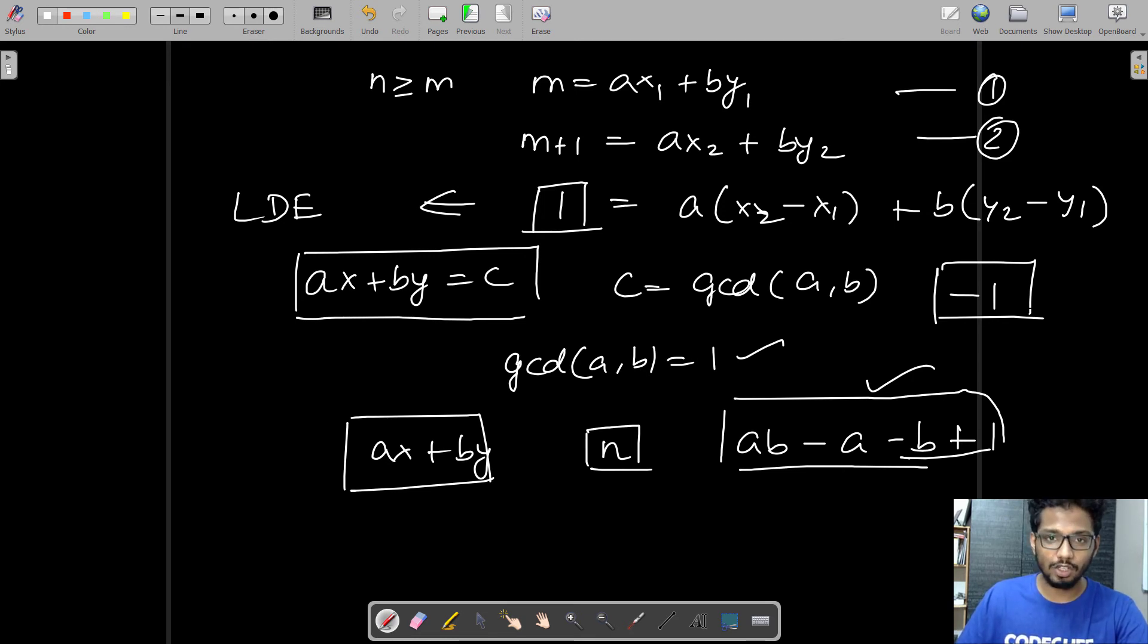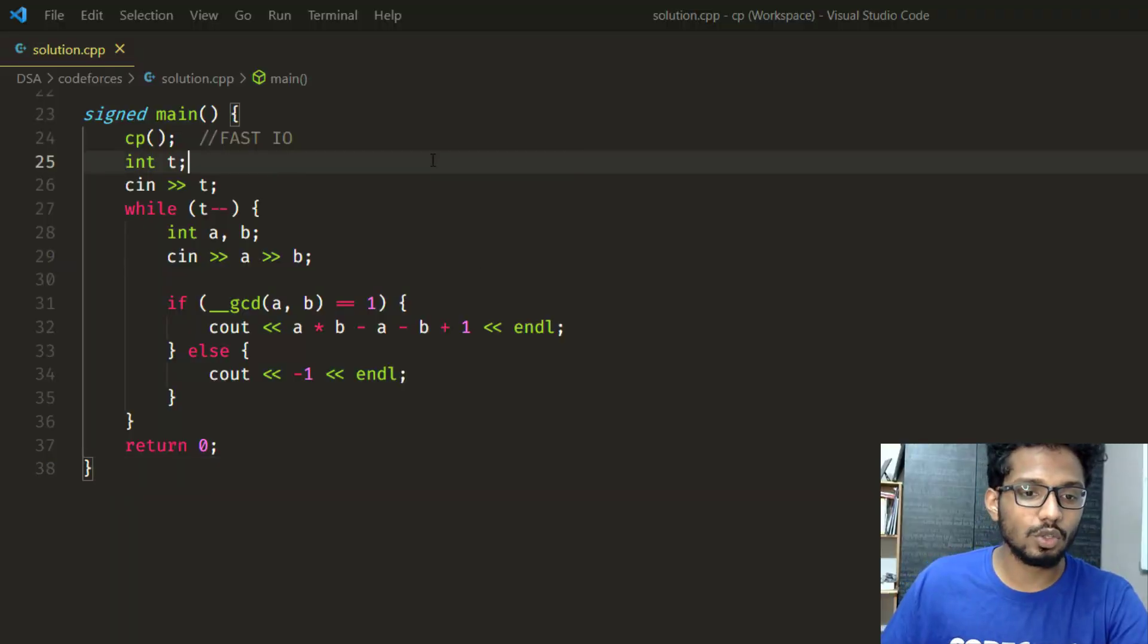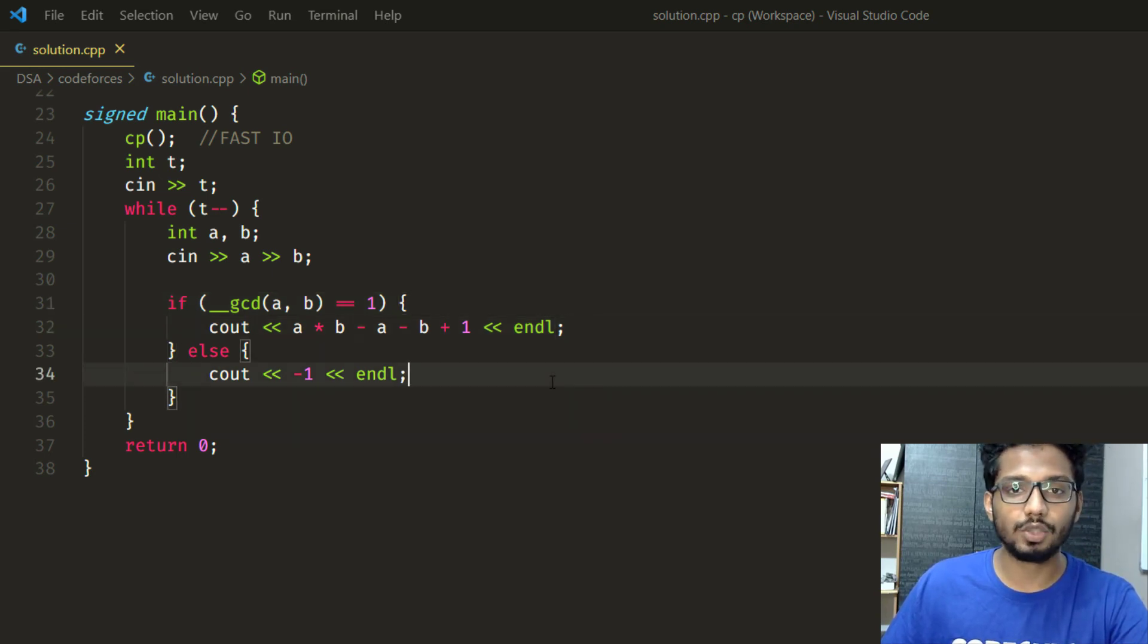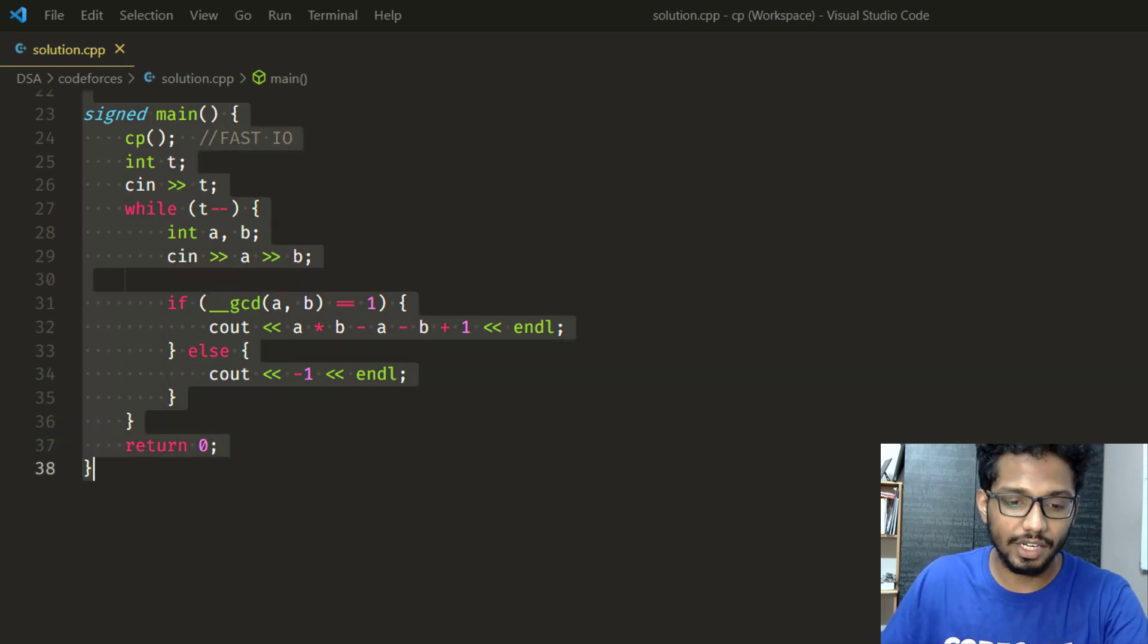Here is the C++ code for the approach I discussed earlier. First, I get the number of test cases, and for each test case I input two integers a and b. If gcd(a, b) equals 1, I print a*b - a - b + 1 as our answer. Otherwise, I print -1. I hope you understood the C++ code. Now let's quickly copy it and submit it on CodeChef.